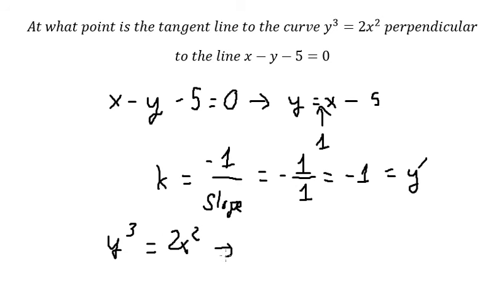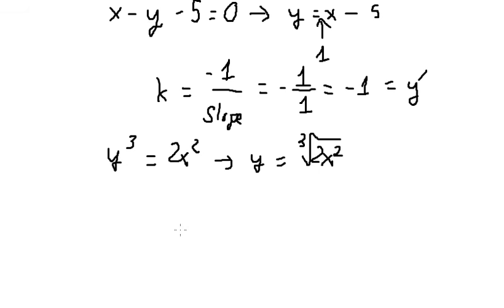We take the cubic root of both sides to get y = (2x²)^(2/3). Taking the derivative, we get y' = (2/3)x^(2/3 - 1), which equals (2/3)x^(-1/3).